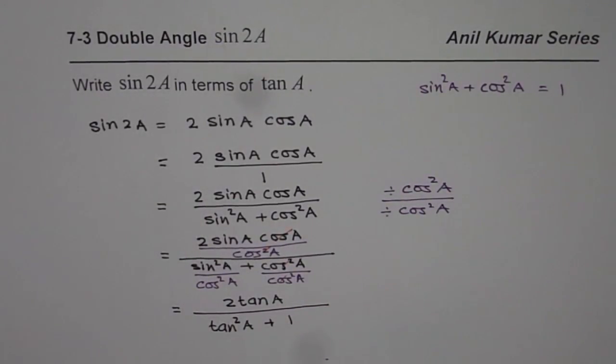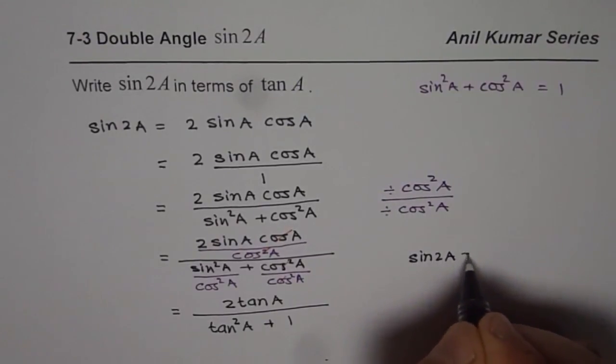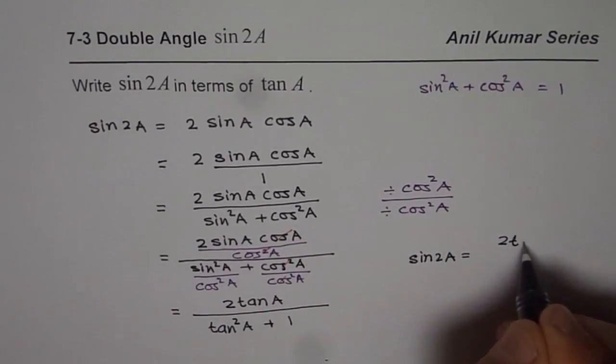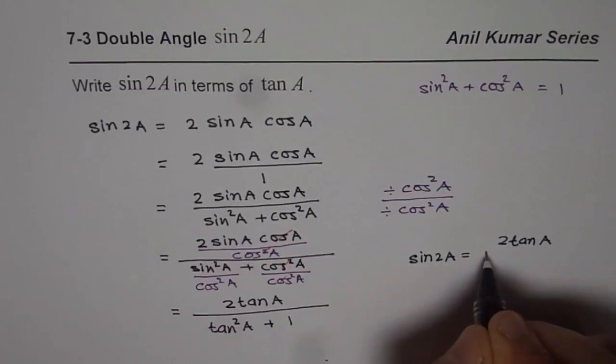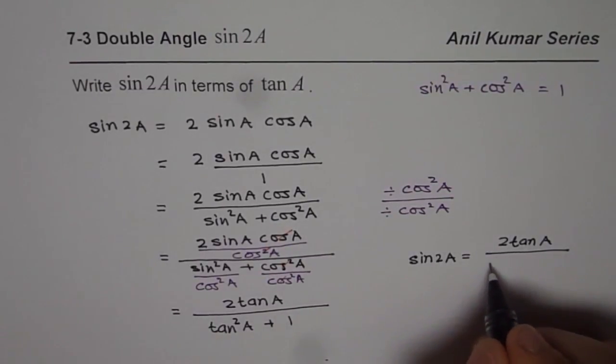Do you get the idea? We get the new formula now, which is sin 2A can be written as 2 tan A divided by tan square A plus 1, or 1 plus tan square A, any way you can write.